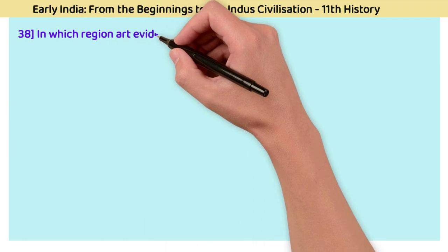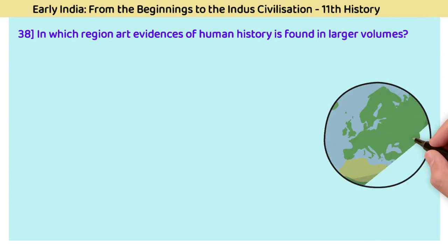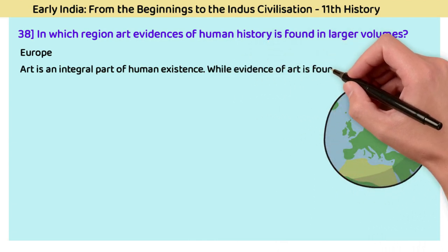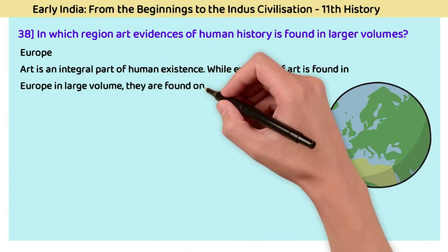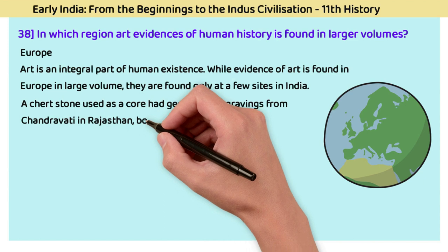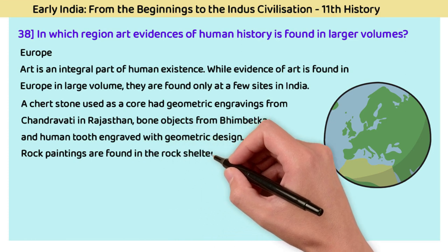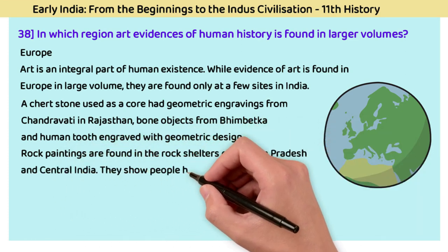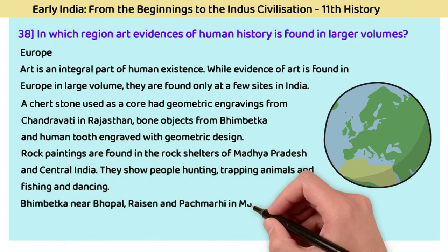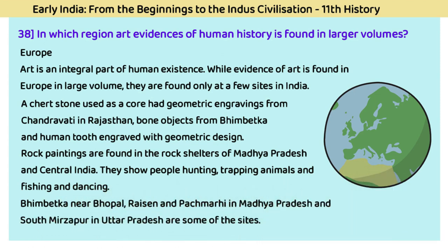Question 38: In which region is art evidence of human history found in larger volumes? The answer is Europe. Art is an integral part of human existence. While evidence of art is found in Europe in larger volumes, it is found only at a few sites in India. A chert stone used as a core had geometric engravings from Chandravati in Rajasthan. Bone objects from Bhimbetka and human teeth engraved with geometric designs, and rock paintings are found in rock shelters of Madhya Pradesh and central India. Bhimbetka near Bhopal, Raisen and Panchmari in Madhya Pradesh, and South Mirzapur in Uttar Pradesh are some sites.